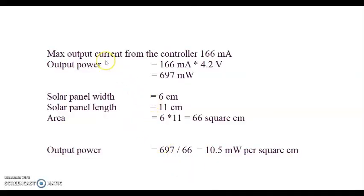Now the power calculation is: the maximum current is 166 milliamp. So the output power is current multiplied by volt, 4.2 volt. So it's 697 milliwatt. I measured the length and width of the solar panel. Width is 6 centimeter, length is 11 centimeter. So its area is 66 square centimeter. So output power is power divided by area. It's about 10.5 milliwatt per square centimeter.